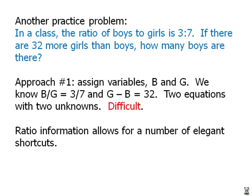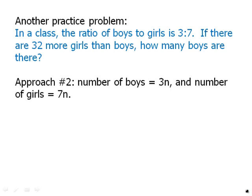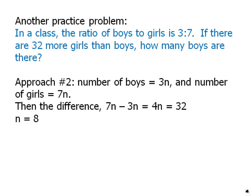Instead, I'm going to show something much simpler. I'll just point out ratio information often allows for a number of elegant shortcuts. Here, I'm going to say let's rewrite the given information in terms of scale factor. The fact that we have a ratio of 3 to 7 means we could say the number of boys is 3n. The number of girls is 7n. We don't know what n is, but in other words we can rewrite this in terms of n. Well then it's very clear that the difference, 7n minus 3n is 4n. 4n equals 32. Well immediately we can solve for n and then solve for the number of boys. So that's a much more elegant solution.